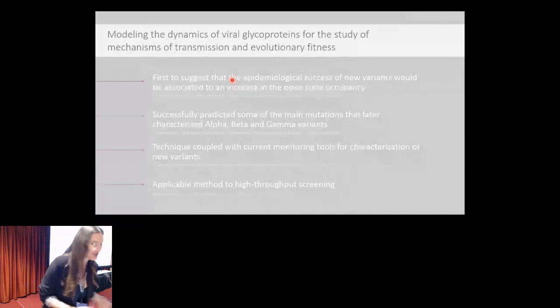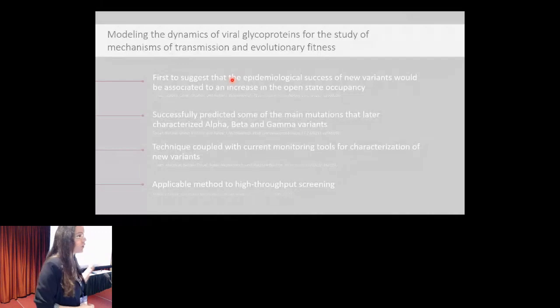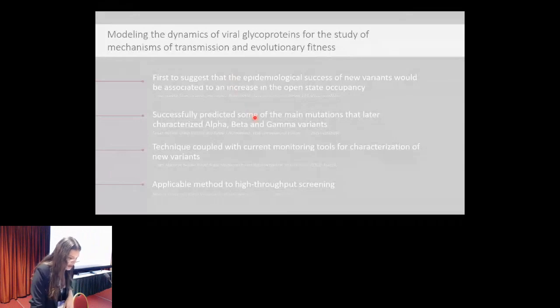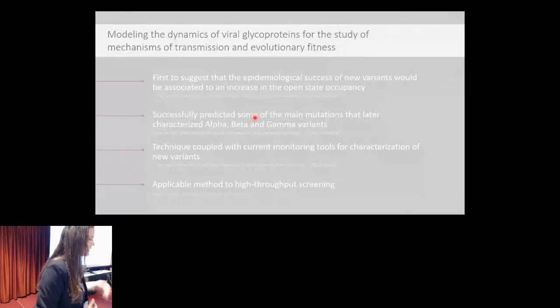What we were able to achieve with this work was that we were the first to suggest that a favored open conformational state would be associated with the epidemiological success of new variants. We were also able to successfully predict several of the mutations of alpha, beta and gamma variants.